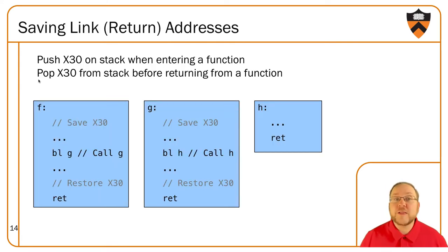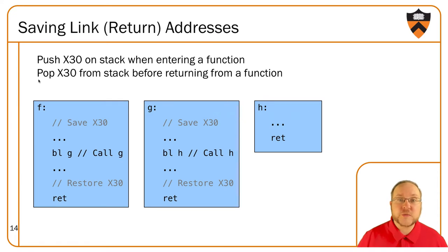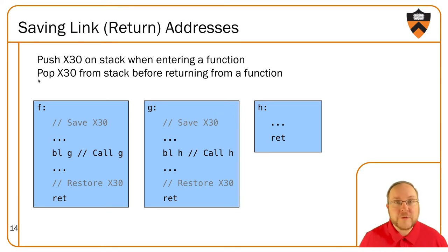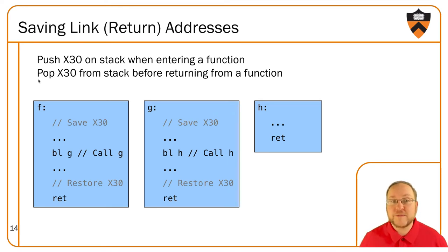In each function, we save X30's value into the stack frame and then go about our business. At the very end of the function, when we're ready to return, we restore the value into X30 from the stack. All those stack frames we've been showing you this entire time had an omission — in addition to local variables and parameters, there's also an X30 register value that's always been there but we never mentioned.